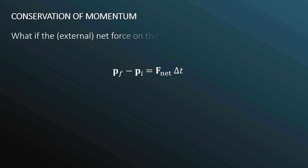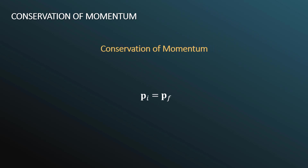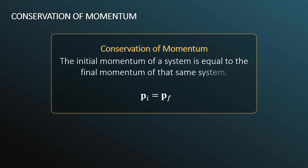Now let's discuss conservation of momentum. What if the external net force on the system is zero? Well, that means the right-hand side becomes zero. So the change in momentum equals zero, and we can rewrite this as: initial momentum equals final momentum. This is only true if the net external force on the system is zero. This is conservation of momentum — the initial momentum of a system equals the final momentum of that same system.